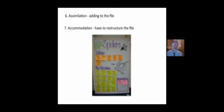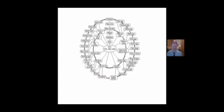This Piagetian concept — assimilation — is when we are adding information to an existing file. New information corresponds with what we already know, so it's pretty easy to assimilate. Accommodation occurs when you get new information that doesn't match the file folder in your head, so you have to restructure it. Or when information is totally new, you have to accommodate. Here is an illustration of what a schema might look like, related to eggs — you can see all the related information there.